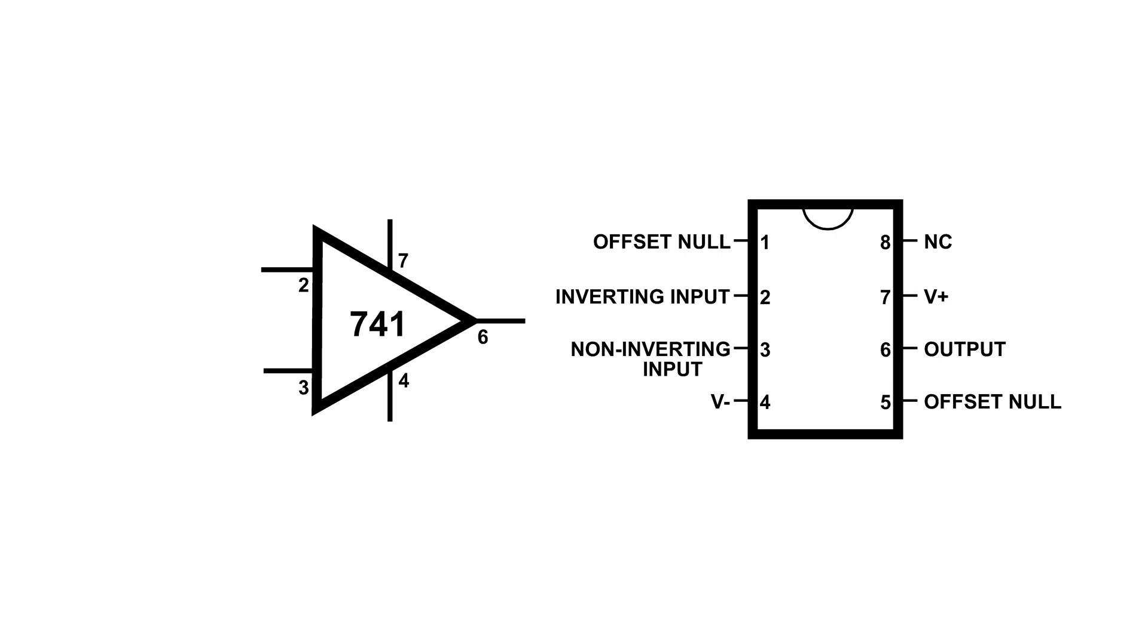We've got the offset null at pins 1 and 5, and if you take a look at the specs for this 741, those go to a 1,000 ohm resistor on the inverting and non-inverting side. I'm not going to use them in this demo. I'm just going to use the default 1,000 ohm resistor that's internal.